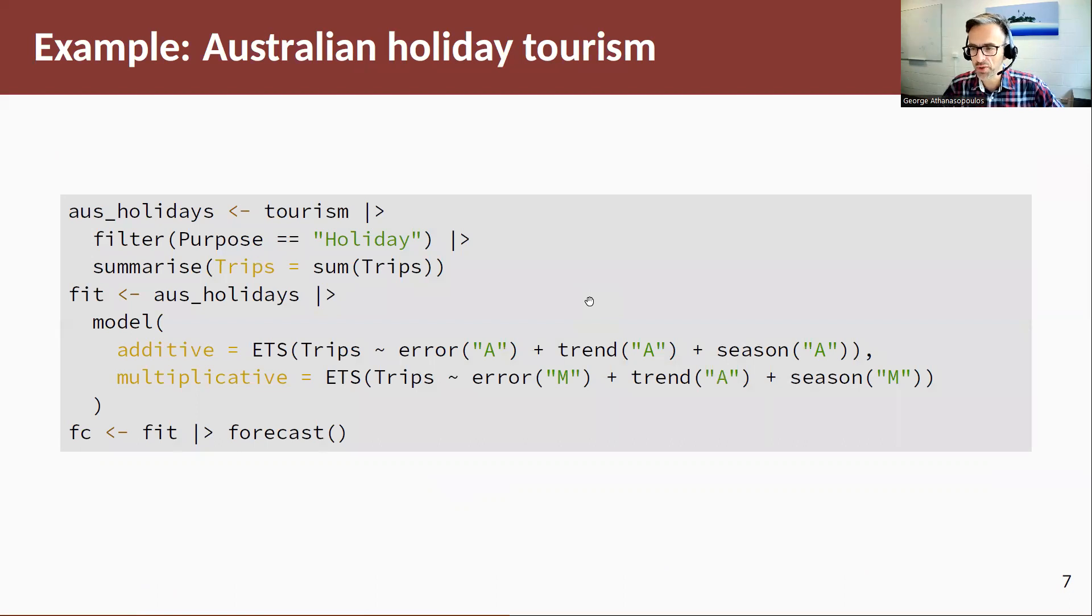Let's have a look at an example so we can explore these with a data set. We're going to take the tourism data and use the holiday series and we want to forecast the Australian holidays, the aggregate of these using two methods. We're going to use the additive Holt-Winters method and the multiplicative Holt-Winters method. Now, the function we use here again is the ETS function, which we will talk in detail in the next couple of sections of the book. The way we define this in the ETS function is to choose the error term as additive, additive trend, additive seasonality. For the multiplicative method, we're going to choose it, it matches well where your error process is multiplicative, trend is additive and your seasonal component is multiplicative.